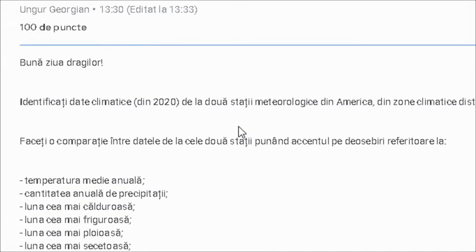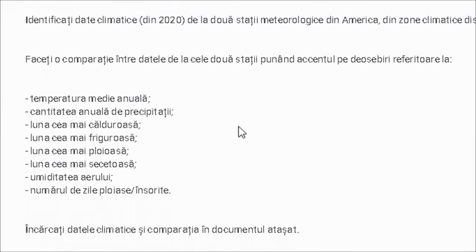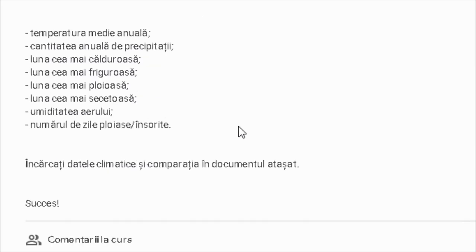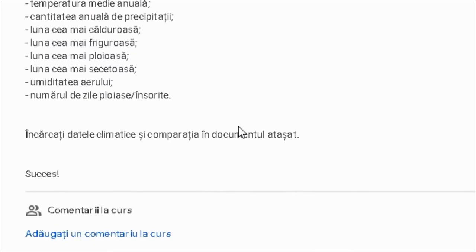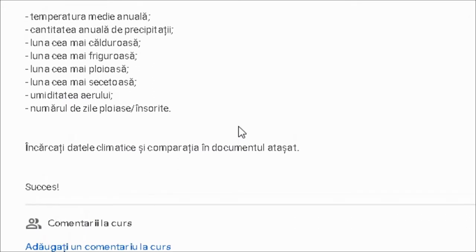Faceți o comparație între datele de la cele două stații, punând accentul pe deosebiri referitoare la: temperatura medie anuală, cantitatea anuală de precipitații, luna cea mai călduroasă, luna cea mai friguroasă, luna cea mai ploioasă, luna cea mai secetoasă, umiditatea aerului și numărul de zile ploioase sau însorite. Încărcați datele climatice și comparația în documentul atașat.